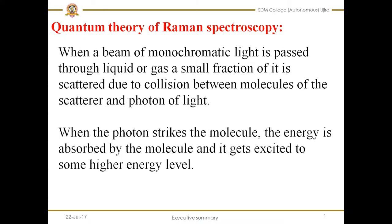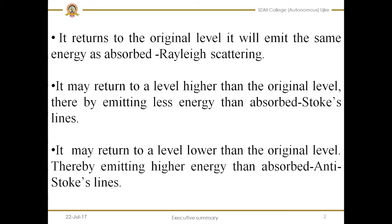Here the scattering of light is due to the absorption of radiation. Once the molecule is irradiated with the photon, that molecule absorbs the radiation and gets excited from the lower energy state to the higher energy level. This excited molecule may return to the original level with the emission of the same energy, and that is called a Rayleigh line.